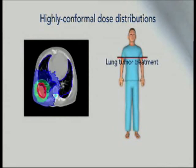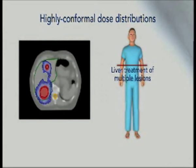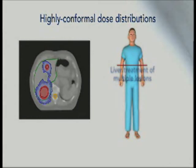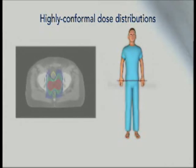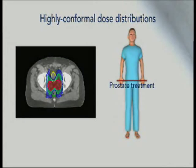Here, a tumor in the pleura surrounding the lung is covered by a highly focused dose distribution that steers sharply away from the cord. Two or more tumors can also be treated simultaneously with TomoTherapy. Treatment of the prostate and seminal vesicles, while keeping dose away from the adjacent bladder and rectum, is another challenge met by TomoTherapy.